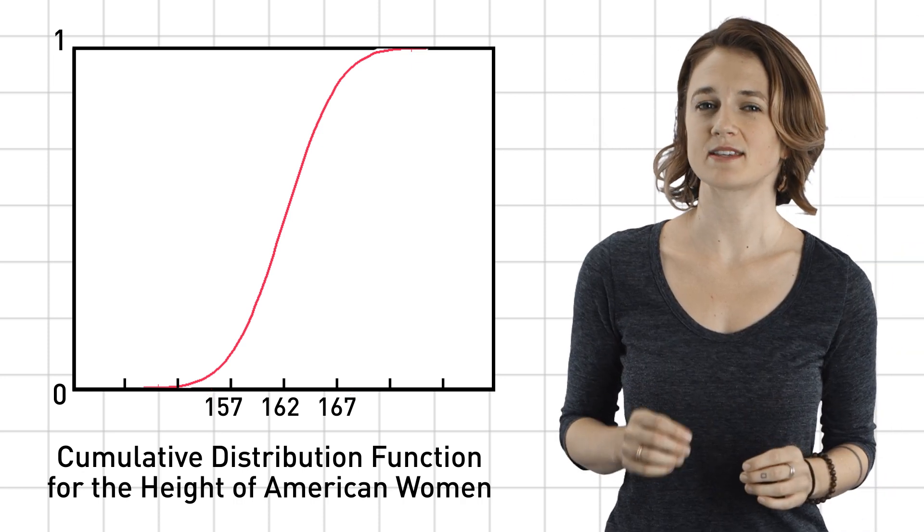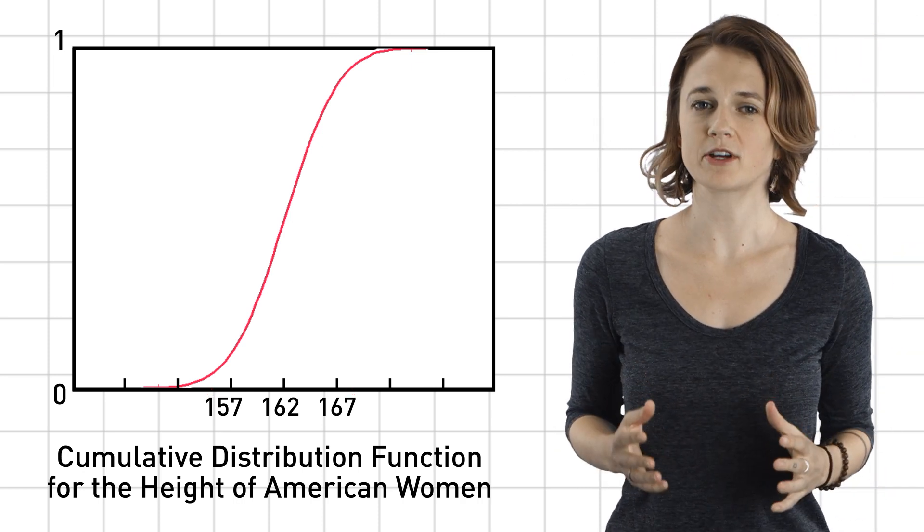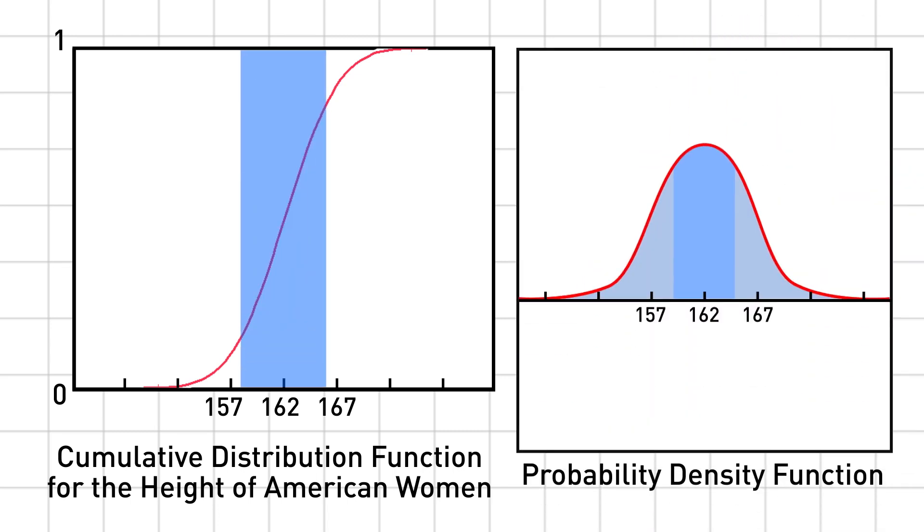Let's check that this makes sense intuitively. Most American women are around this height. That's why the cumulative distribution function grows so quickly there. The steep slope corresponds to a high probability, and shallow slope to a low probability. We uniformly randomly select a point on the y-axis and then determine the point on the x-axis that gives that function value.